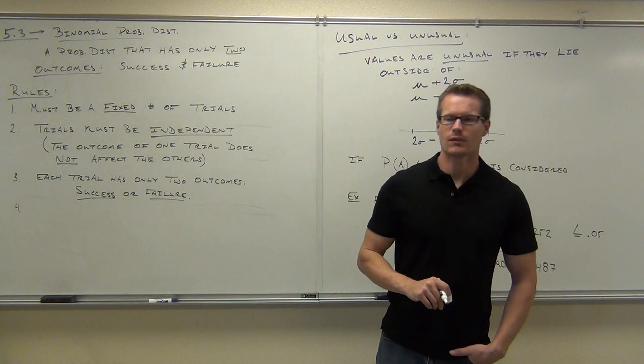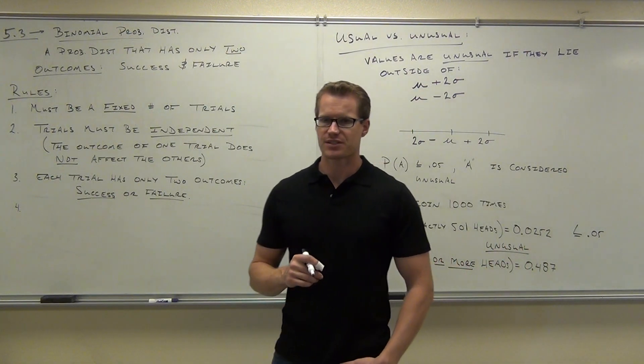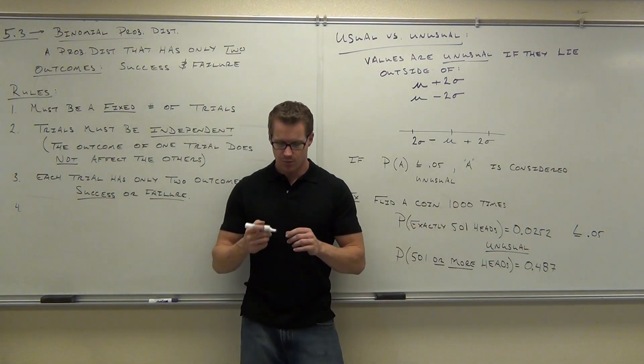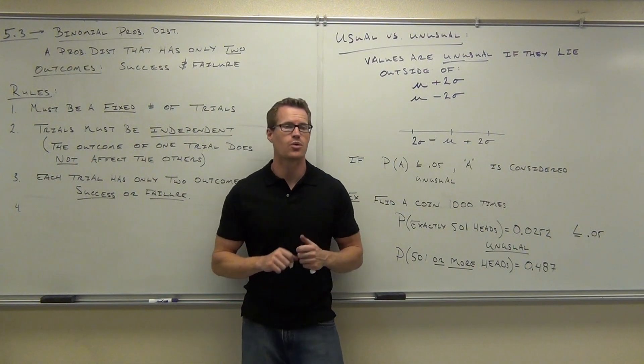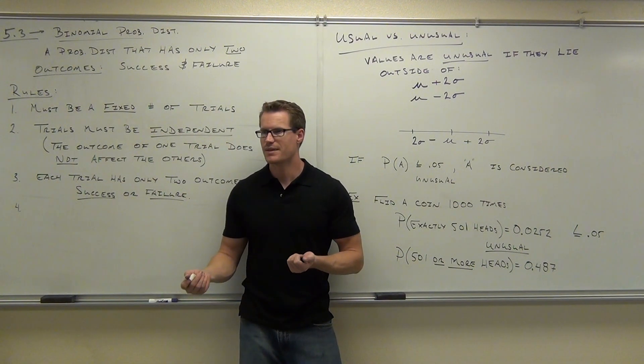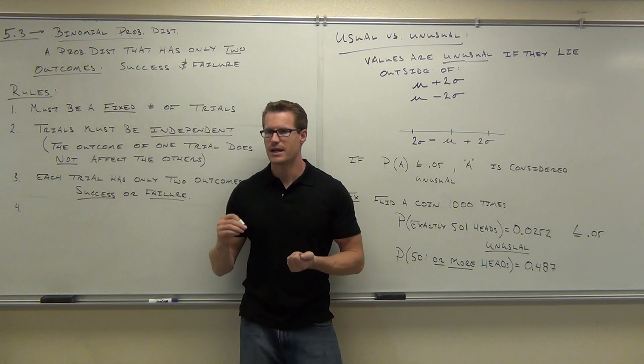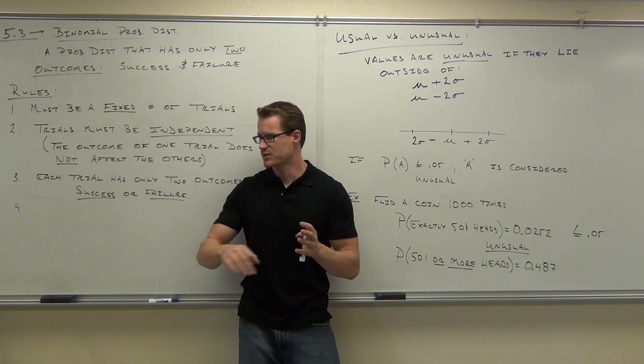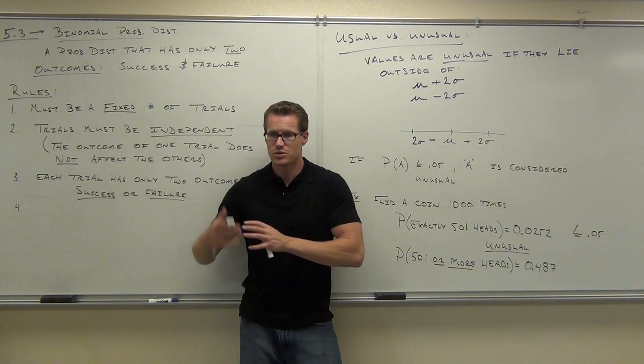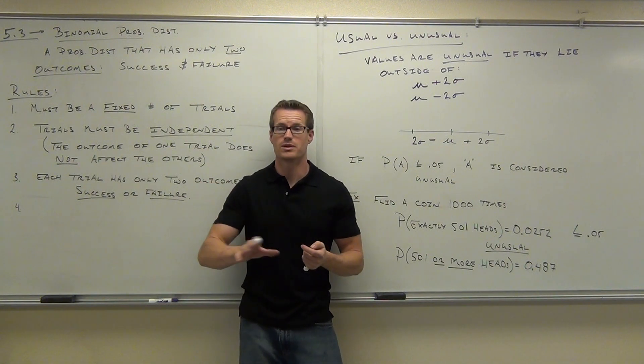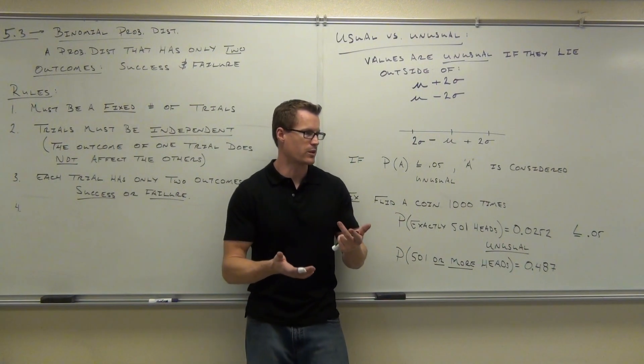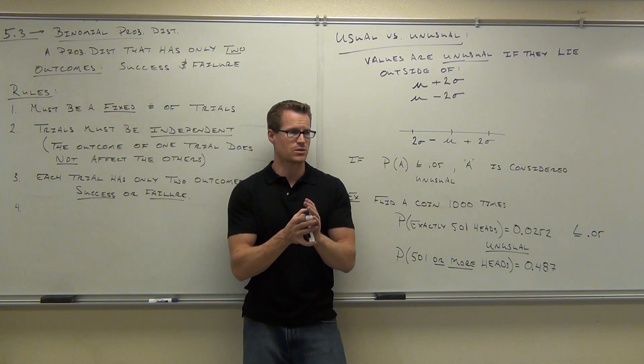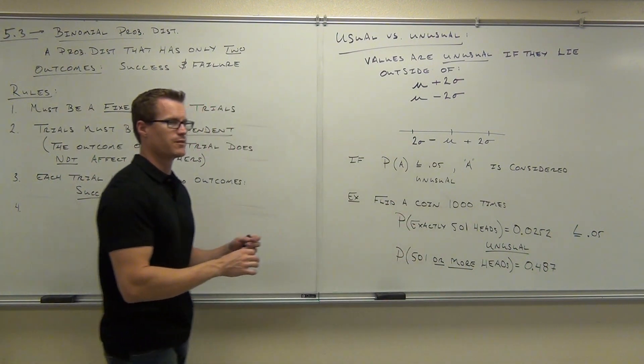And number four, the probability of a success has to stay the same for each trial that you do. For instance, if we're flipping a coin a thousand times, we're not going to go halfway through and say we're going to switch coins and this one has more of a chance of being heads. That wouldn't work so well for us. So the probability of getting a head has to be the same every time. If we're rolling a die, the probability of rolling a three, if that was our success, would have to be the same every single time. It can't change. So we could do this with a weighted die, it would just have to be that the probabilities don't change halfway through my experiment or vary trial by trial. So every time you repeat the trial, the probability of a success is the same.